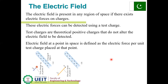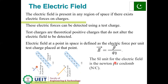Here are two figures showing that a positive charge experiences a force due to the electric field, and figure B shows that electric intensity at point P is E. The electric intensity vector is equal to F over Q₀. The SI unit for the electric field is Newton per Coulomb. Electric field is a vector quantity.